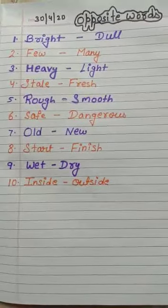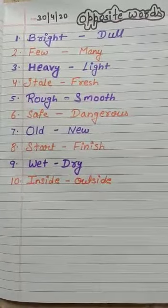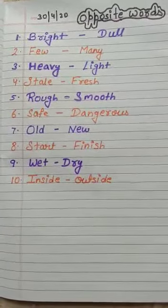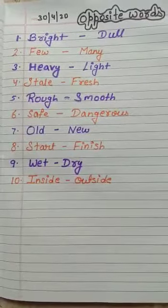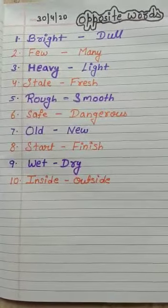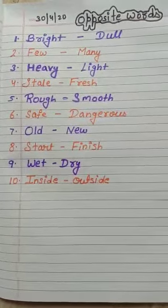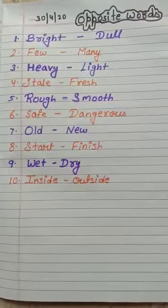First one is bright, dull. B-R-I-G-H-T. Bright means chamakta hua. T-U-L-L, dull. Dull means feeka.